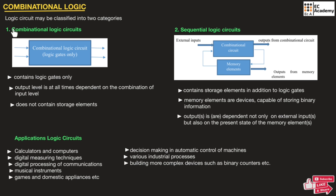If we consider any logic circuit, the logic circuit may be classified into two types. The first one is combinational logic circuit and the second one is sequential logic circuits. The combinational logic circuits consist of only logic gates, but do not contain any storage element. A sequential logic circuit consists of memory elements along with logic gates. When logic gates are connected together to give some specific output for certain inputs without any storage element, it is known as a combinational logic circuit.